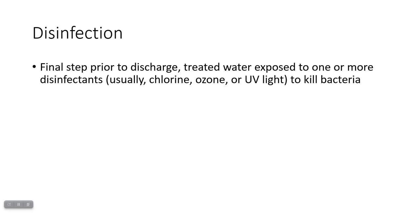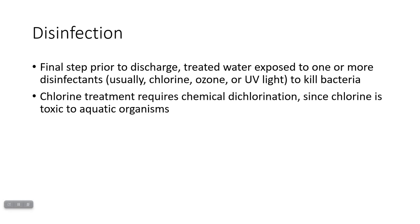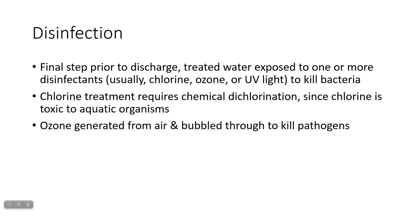Before you can release water to the environment, you've got to disinfect it to make sure any pathogens — including any bacteria you were using in secondary treatment — are killed before releasing this stuff. The most common forms are chlorine, ozone, or UV light. Chlorine has traditionally been the disinfectant of choice because it was very easy to acquire and easy to add. The main problem is that it requires chemical dechlorination because chlorine is toxic to aquatic organisms, so you can't just release chlorinated water into a nearby waterway. You can generate ozone from oxygen in the air and bubble it through to kill pathogens.